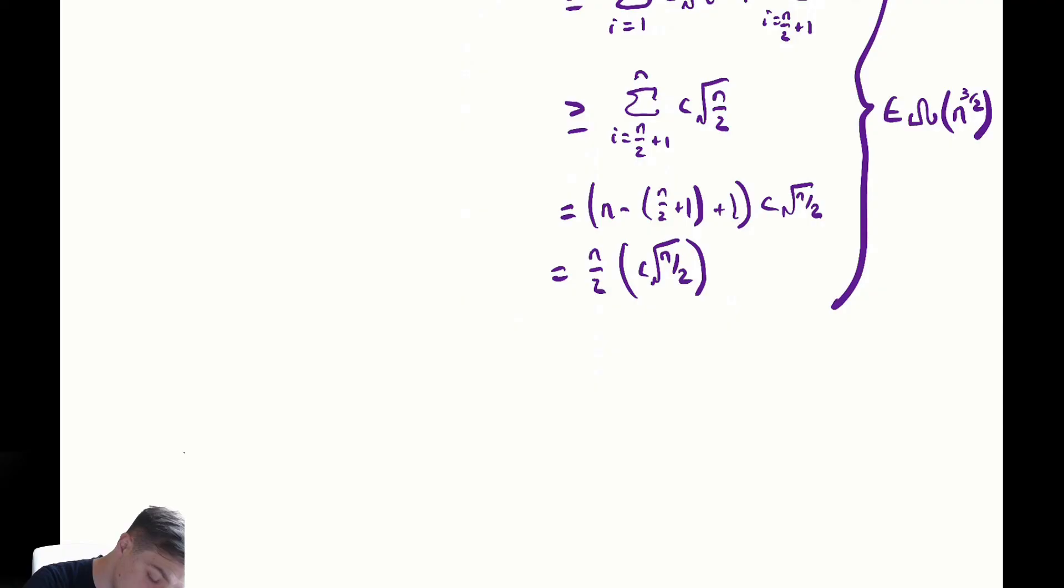So our final conclusion would be that t of n is in theta of n to the three halves.